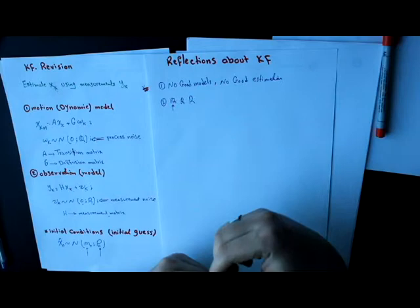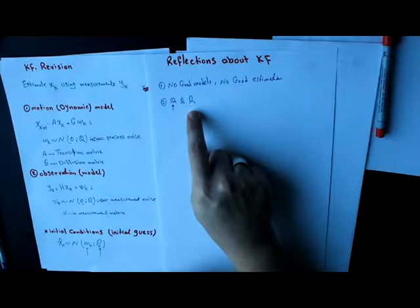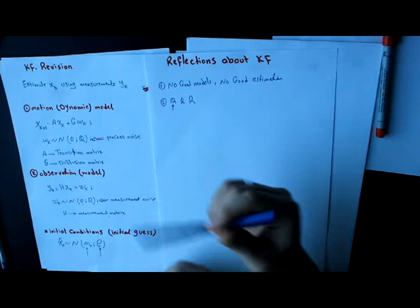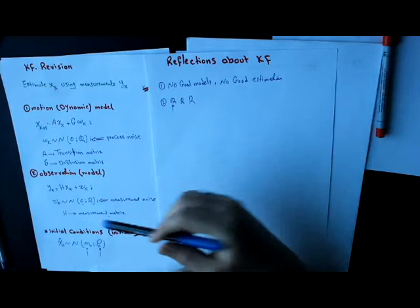Matrix R basically can be obtained from the datasheet of the sensor you use. So for example, if I use a LIDAR or if I use a radar, I will find that the accuracy of the sensor is somehow described in the datasheet. And from this accuracy, I can determine matrix R.